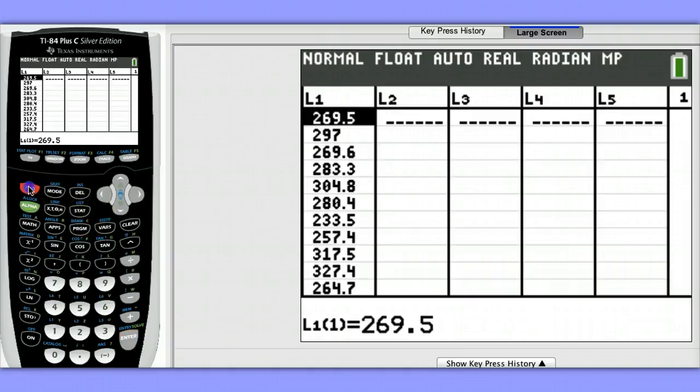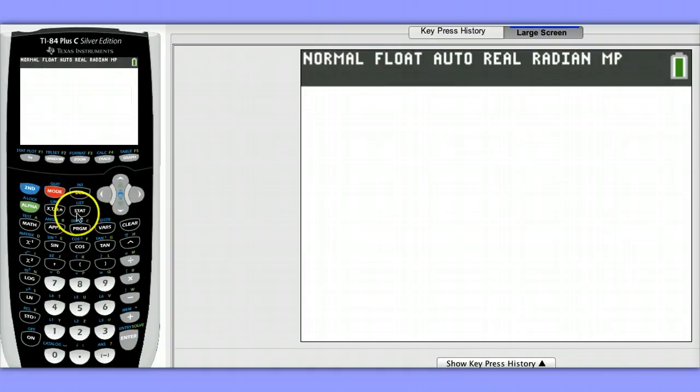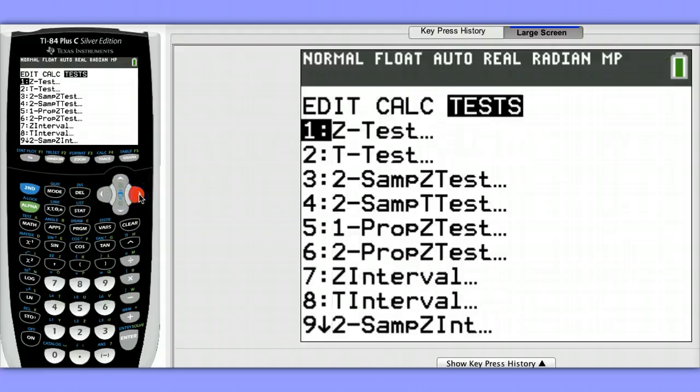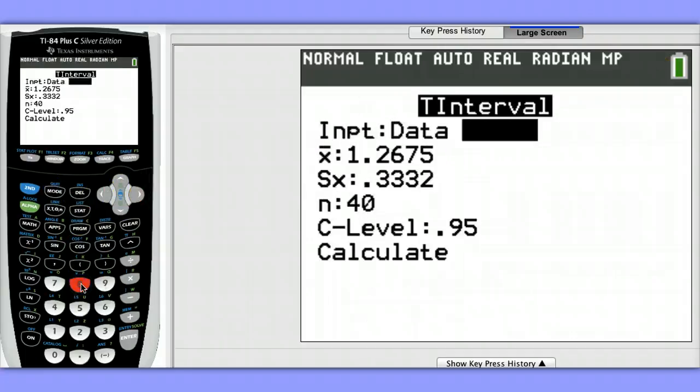To construct my 90% confidence interval, I'll go to stat, choose tests, option eight, TInterval.